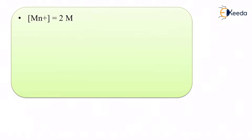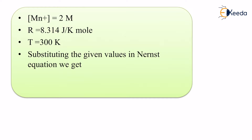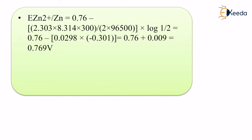Substituting the values: concentration is 2 molar, R = 8.314, and temperature T = 300 K. So we write E(Zn²⁺/Zn) = -0.76 minus 2.303 × 8.314 × 300 divided by nF. The value -0.76 is taken directly from the question. We know T = 300 K.